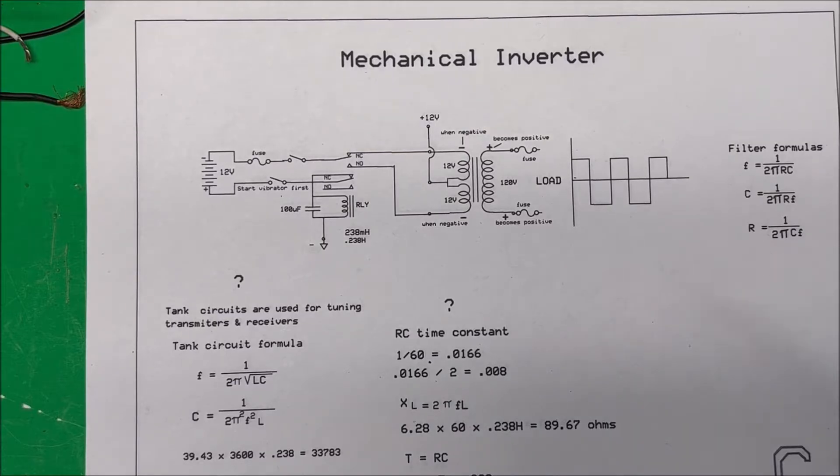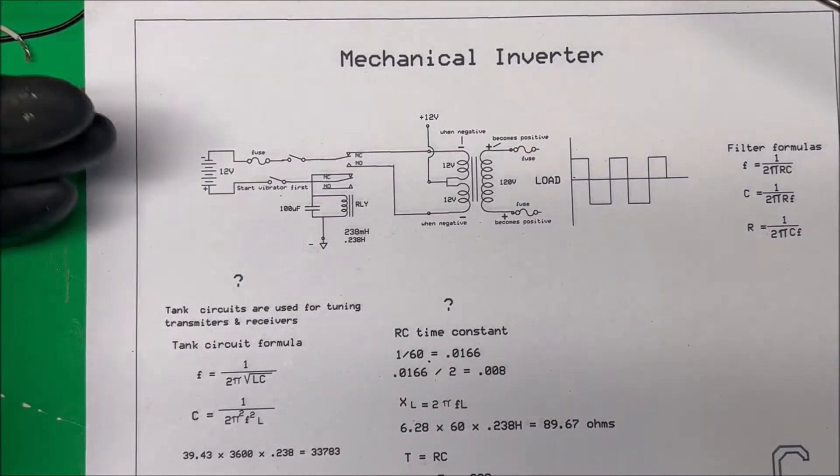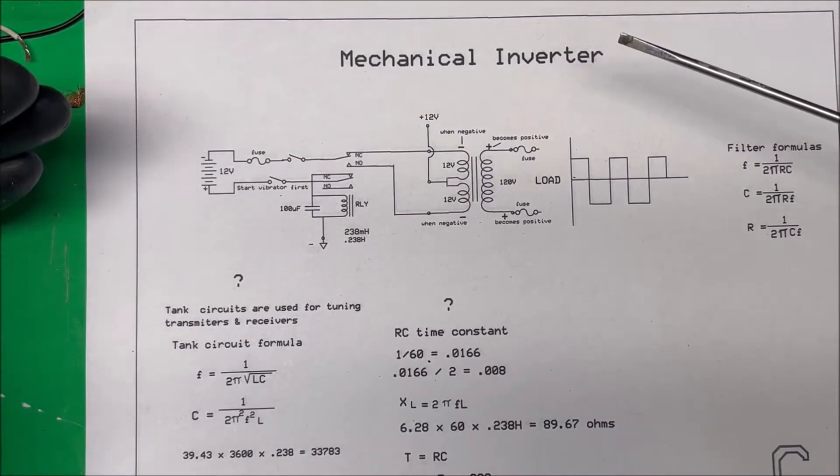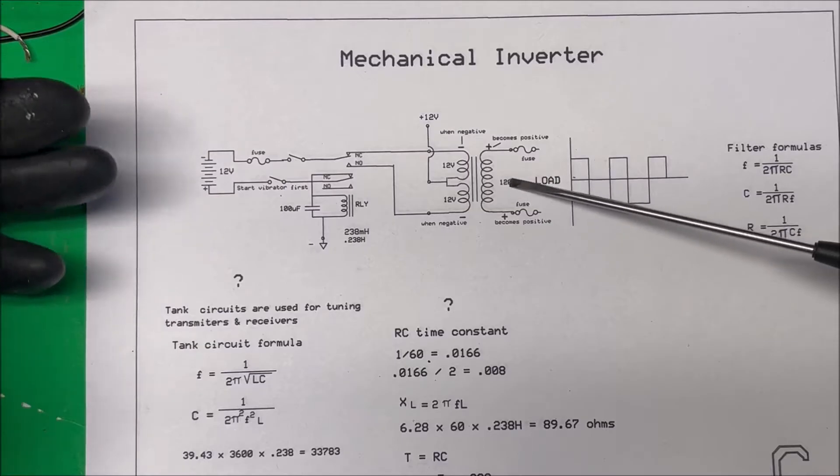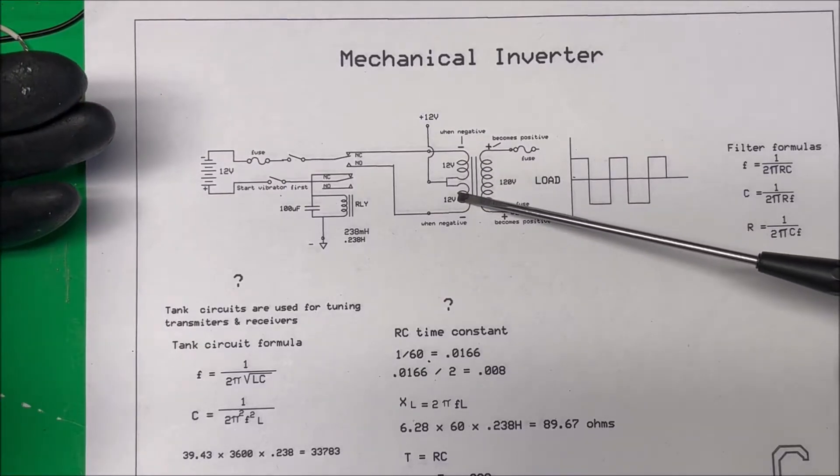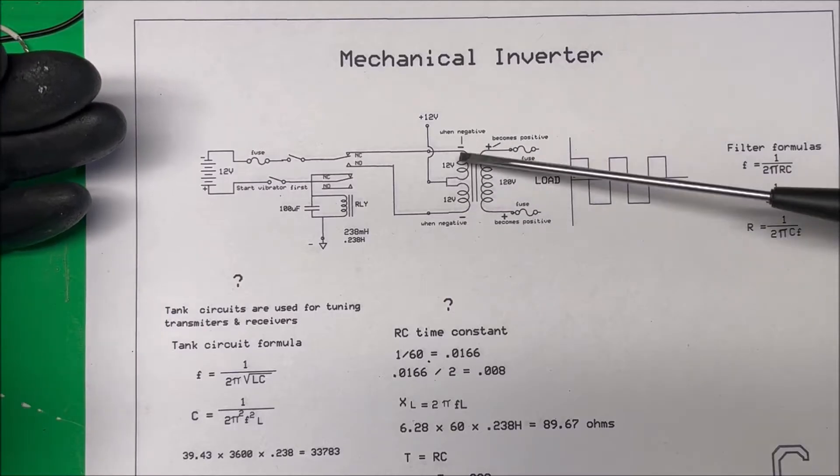Let's take a look at a mechanical inverter I put together out of spare parts. It's not very practical, but it's just fun to put together. So we start off with a transformer - this one was 120 volts to 12 to 24 volts, so it has two 12-volt coils. If you put them in series you get 24 volts, but we're using them as 12 volts here.